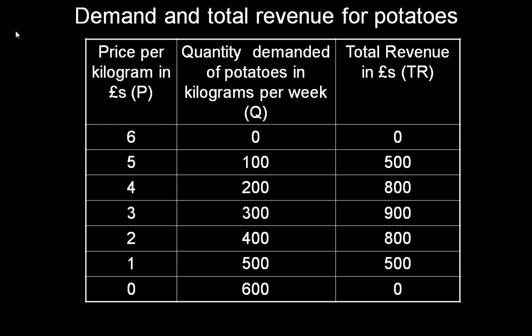Total revenue, which is the price times quantity demanded, increases up to a quantity of 300kg, and then falls away because of the nature of our demand curve. Sometimes we refer to price as average revenue, that is, the revenue obtained from a unit sold.